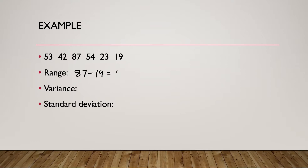That essentially tells me about the spread of the data set — that it spans or spreads over 68 possible values. Now let's look at the variance. I'm going to jot the formula up here so we can look at it as we go. The formula requires that we calculate two sums.